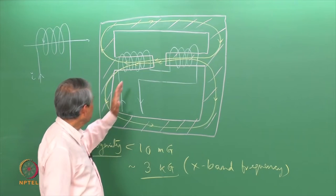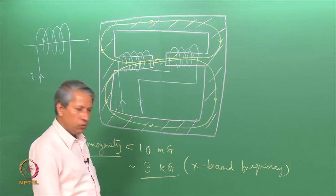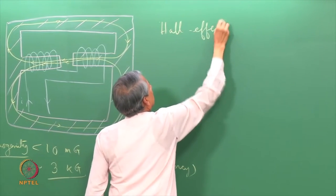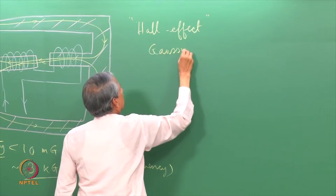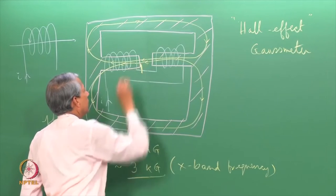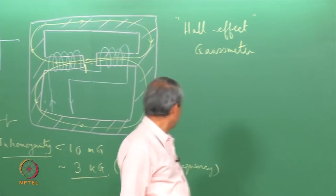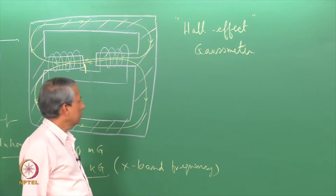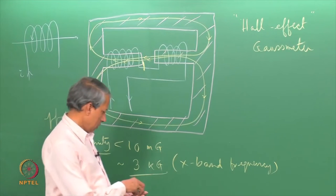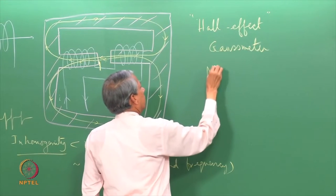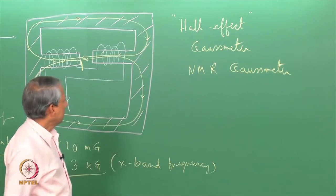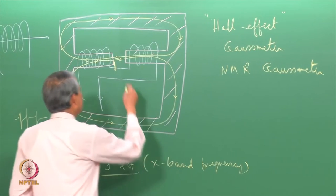How to measure the magnetic field very precisely? Usually one uses a gaussmeter which is made up of Hall effect. This Hall effect gaussmeter, the probe is kept somewhere here and the magnetic field can be measured. This measurement is usually good enough for common, not very precise measurement where one does not require this type of precision. When one needs this type of precision, one uses another technique which is based on NMR technique, an NMR gaussmeter.